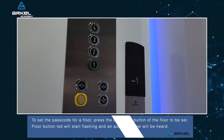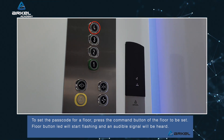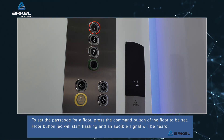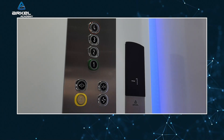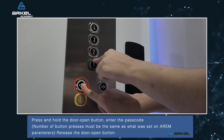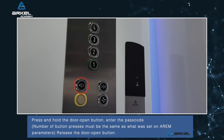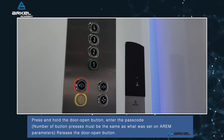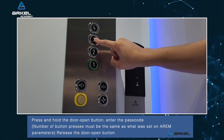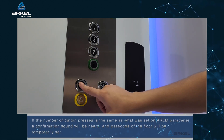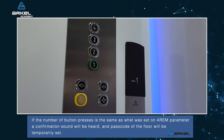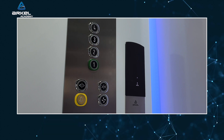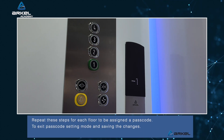To set the passcode for a floor, press the command button of the floor to be set. The floor button LED will start flashing and an audible signal will be heard. Press and hold the door open button and enter the passcode. The number of button presses must be the same as what was set in the RM parameters. Release the door open button. A confirmation sound will be heard and the passcode of the floor will be temporarily set. Repeat these steps for each floor to be assigned a passcode.